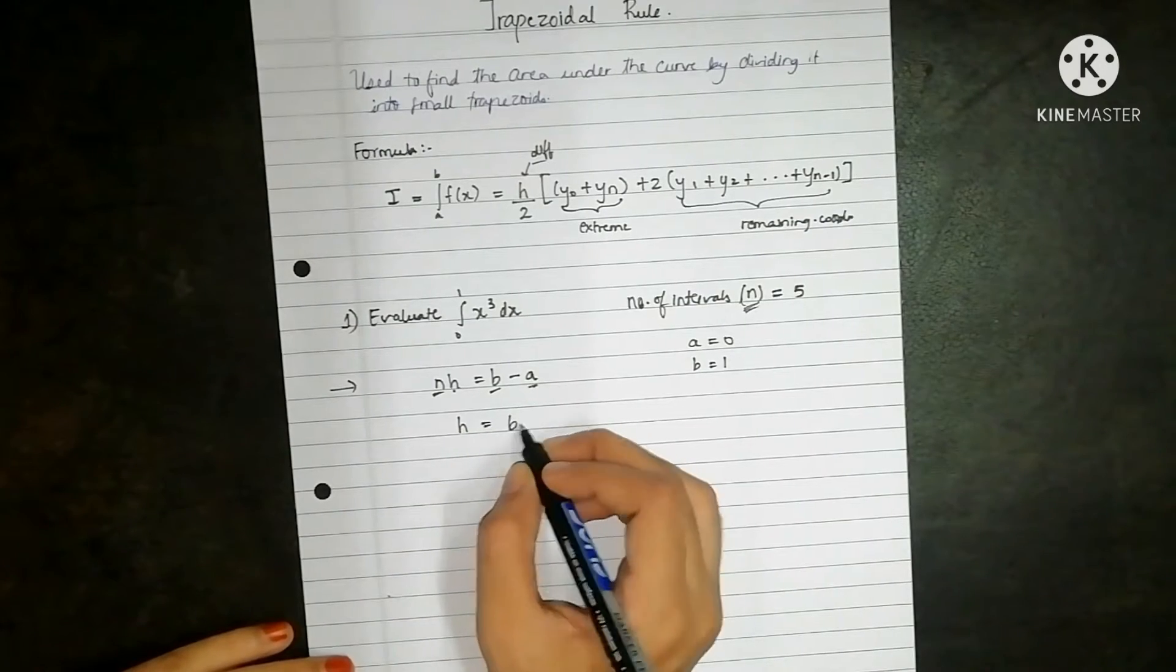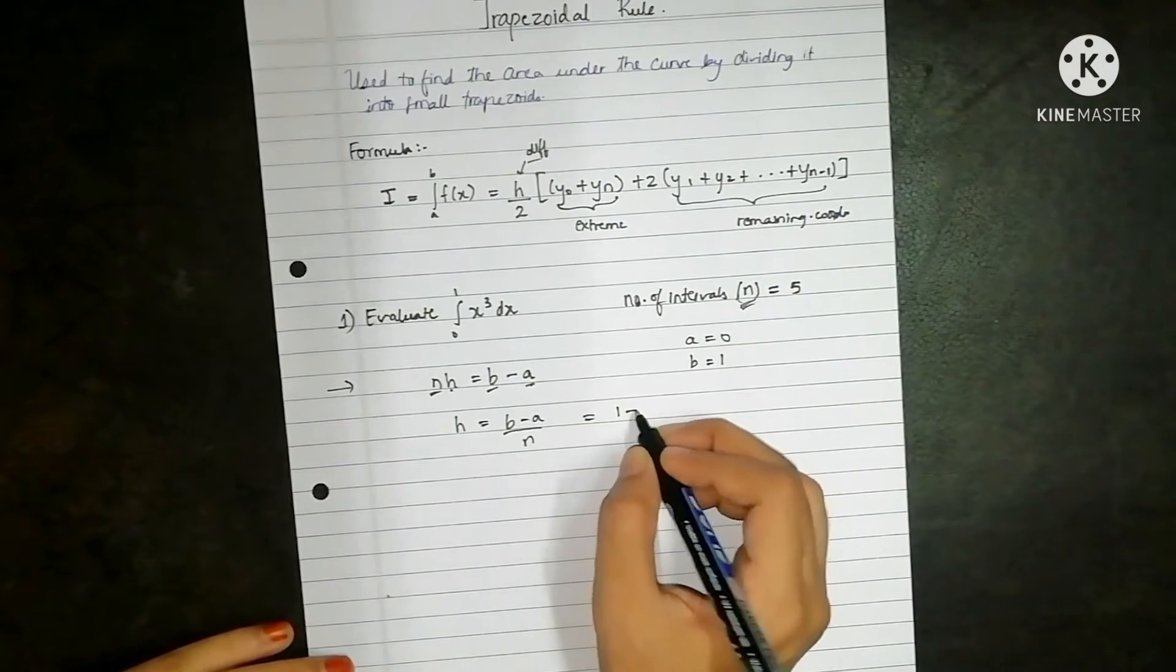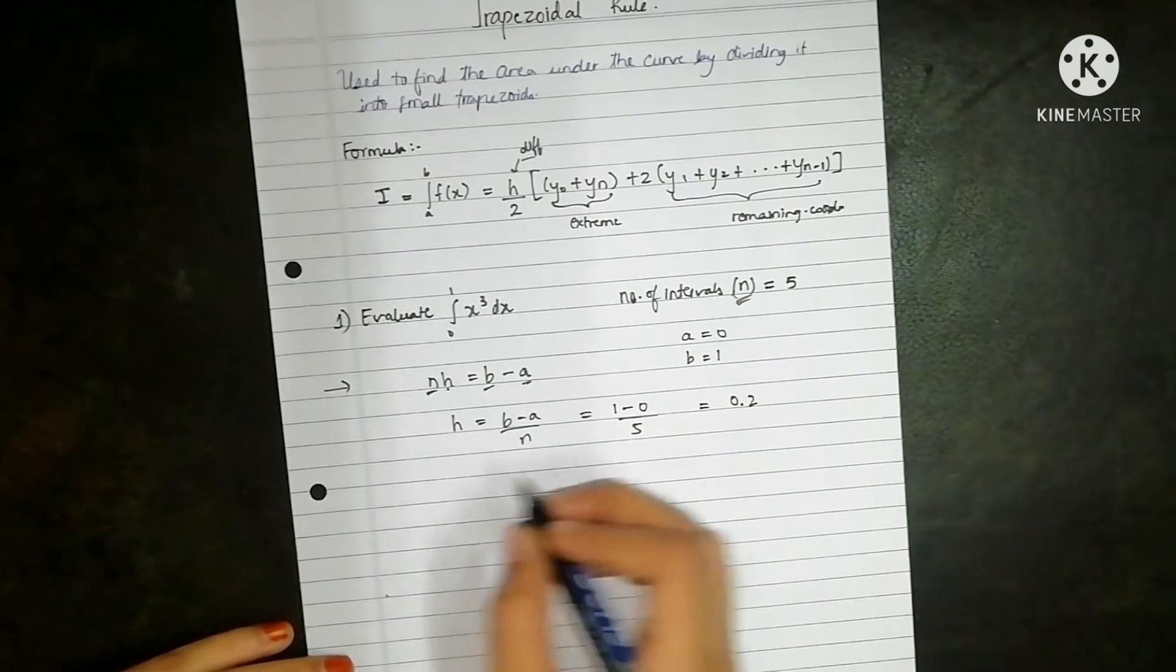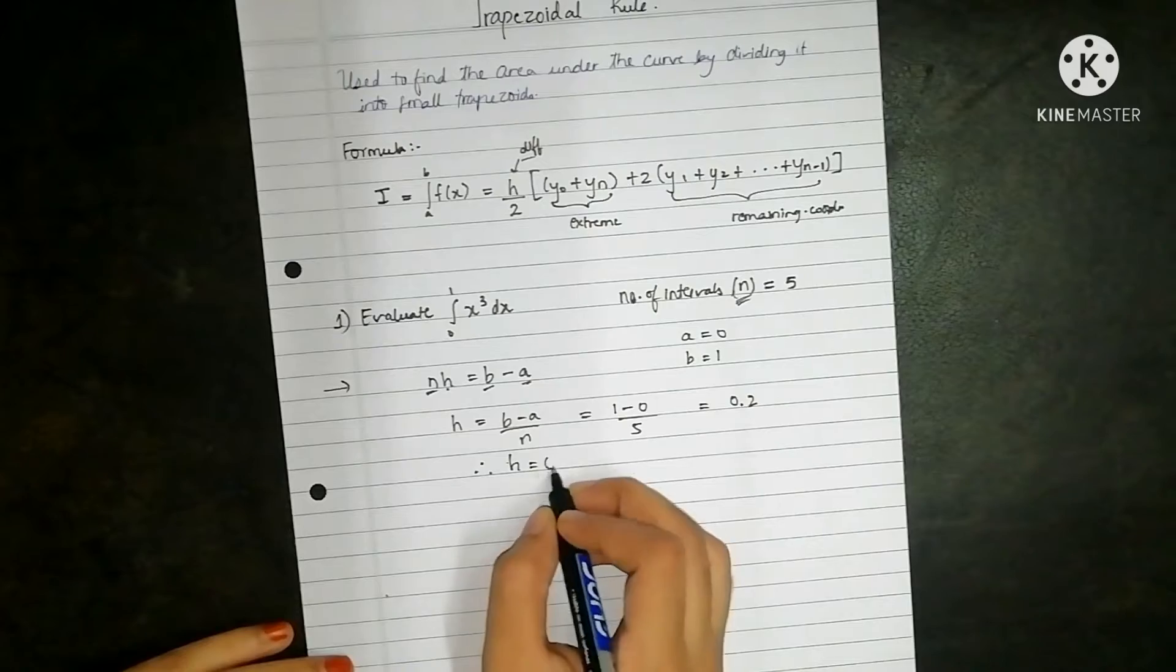So h is equal to b minus a upon n. That is equal to 1 minus 0 upon 5, and that is equal to 0.2. So h is equal to 0.2.